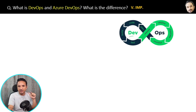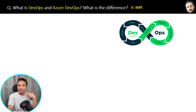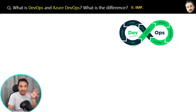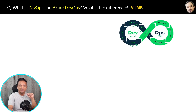In DevOps, 'dev' stands for development. Developers first plan, then they code, then they build the code so that it compiles successfully, and then they test — unit test or whatever testing. Finally, they release the application. Then the operations start, which is 'ops'. The application which is released is partly part of ops and also part of dev.